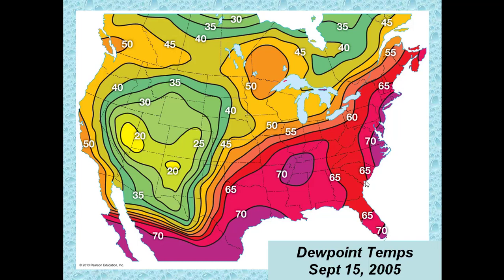But if you go to the northeast or anywhere along the east coast where they have hot and humid summers — a place like Boston or down in Florida, and we all know how humid Florida can be — if you're in Disney World and the outside air temperature was 70 degrees and the dew point temperature was 65 degrees,